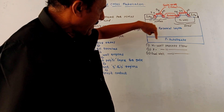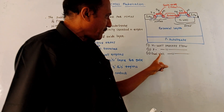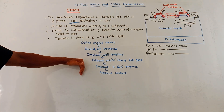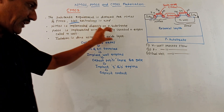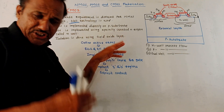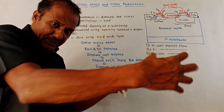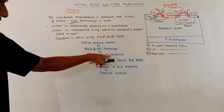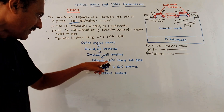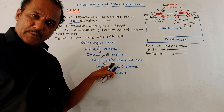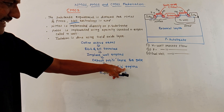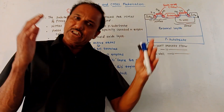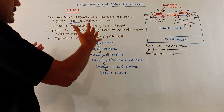The short process flow steps for CMOS fabrication are: first, define the active areas; then etch and fill trenches — a hole is created and then filled; next, implant well regions, either Nwell or Pwell depending on the requirement; then deposit the polysilicon layer for the gate terminal; implant the source and drain regions; and finally deposit the contacts for the source, drain, and substrate terminals.